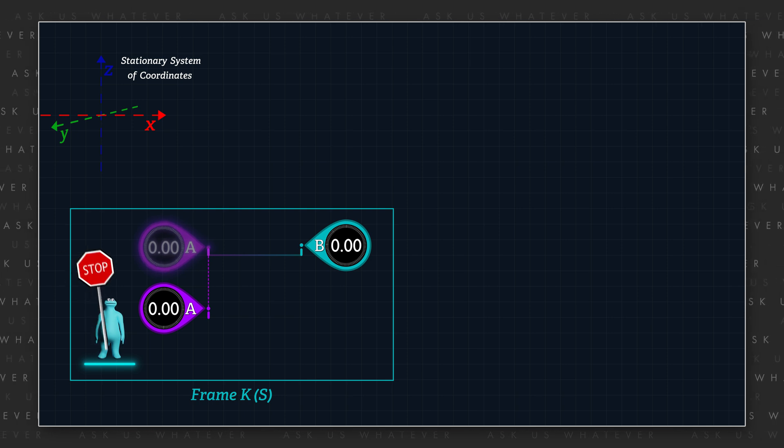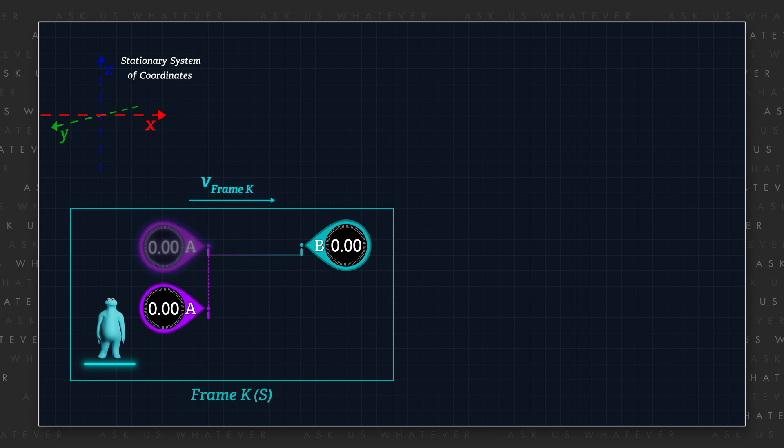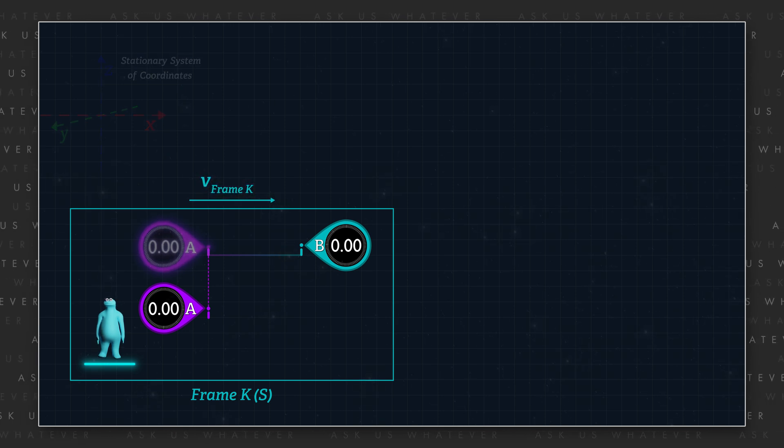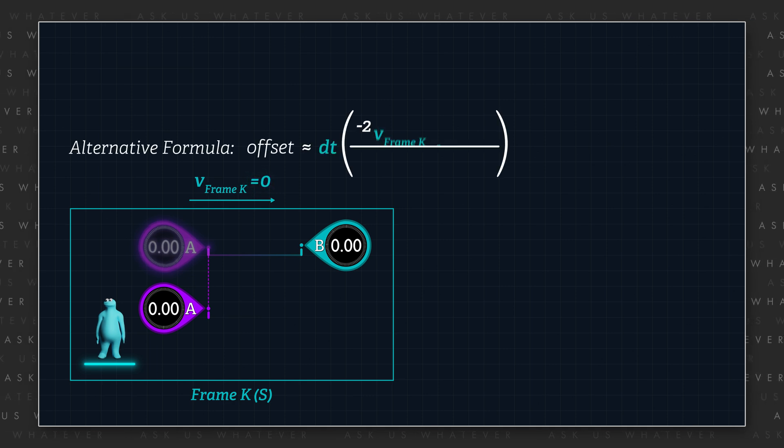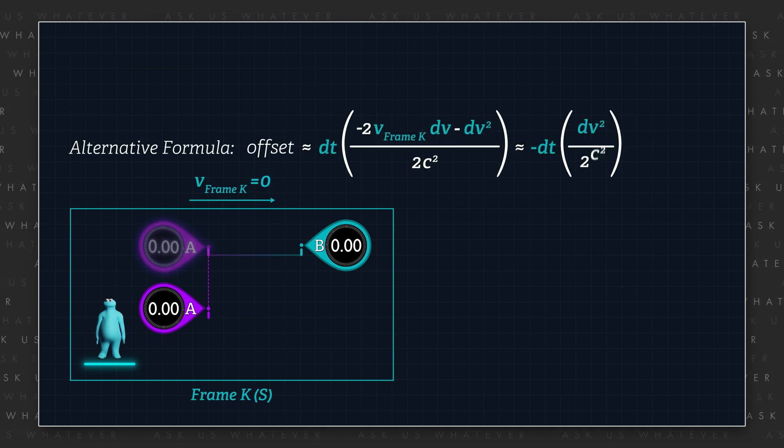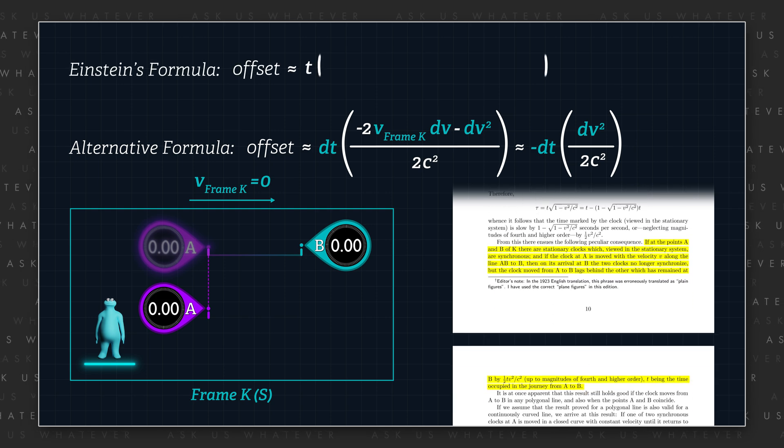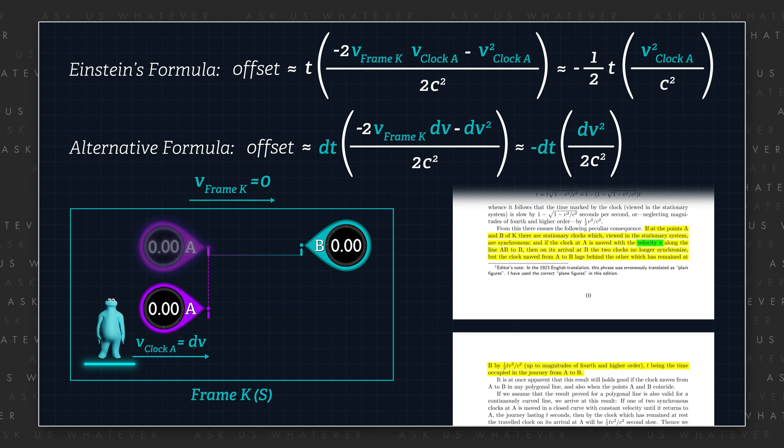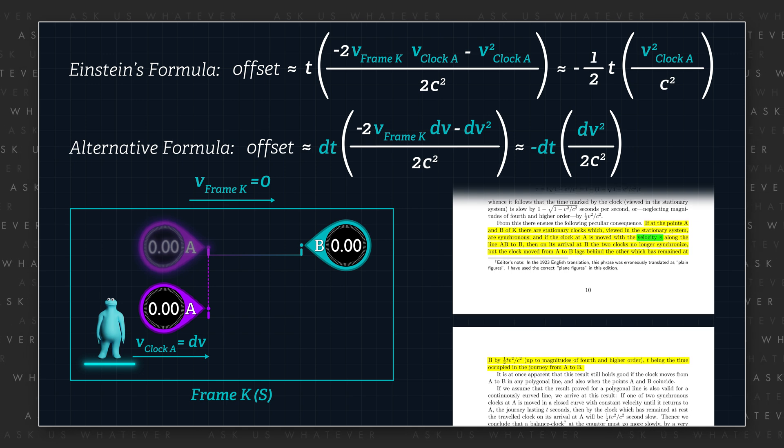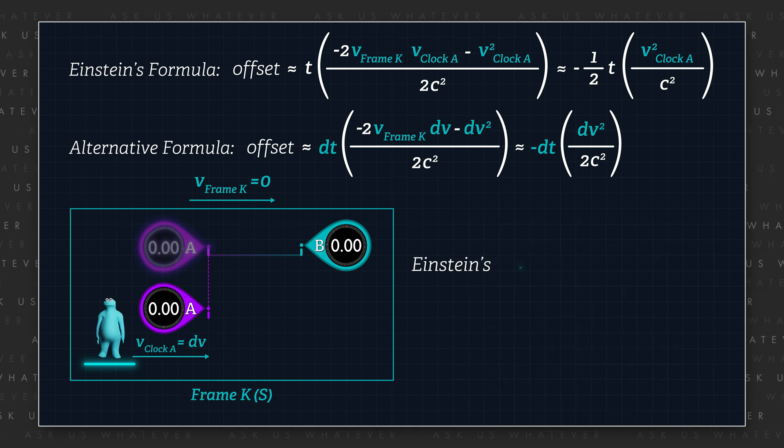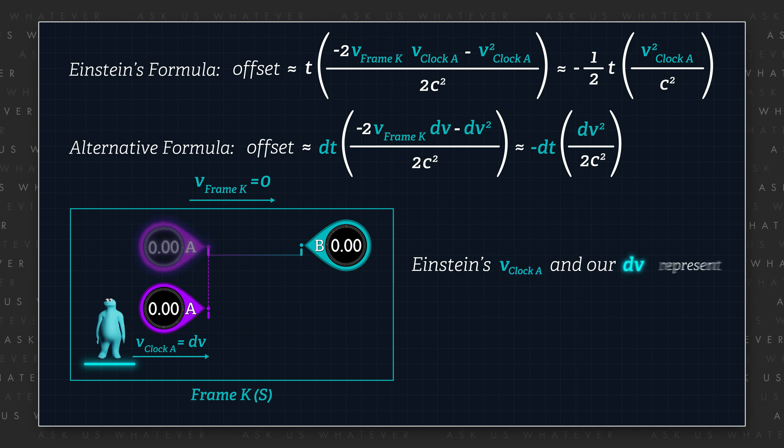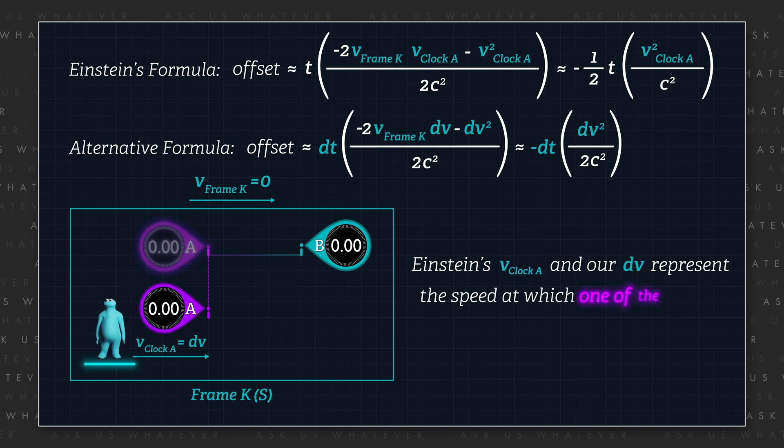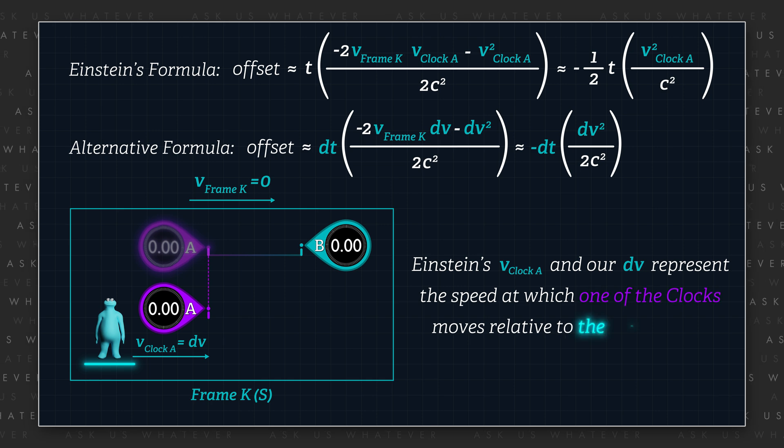which means that what we call the variable V, in other words, the speed of the clock's reference frame through space, would be assigned a zero value in our formula for clock offset. Einstein used the symbol V differently in the quoted paragraph to represent what we have labeled as dV in this expression. In either case, Einstein's V and our dV represent the speed at which one of the clocks moves relative to the other clock.